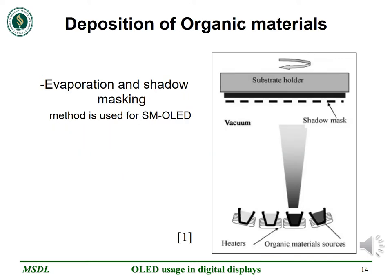The deposition of organic materials onto the substrate to obtain red, green and blue pixels is a major challenge faced by the industry. Accurate positioning and uniformity of the deposition are a must. Small molecules are currently deposited by evaporation through a shadow mask and polymers are mostly dispensed by inkjet printing. In the evaporation and shadow masking technique, we place the small molecule materials inside crucibles which are heated to 100 to 500 degrees Celsius in the vacuum and induce the evaporation of the organic powder.